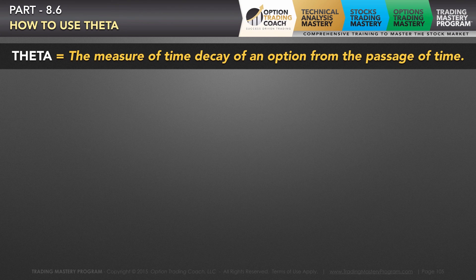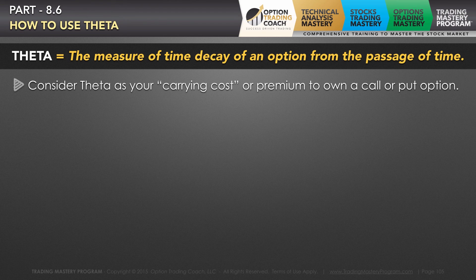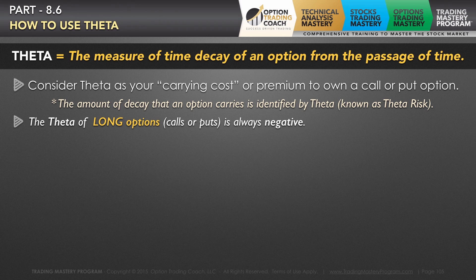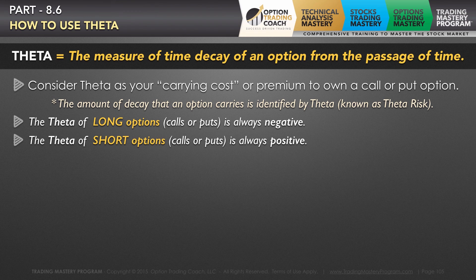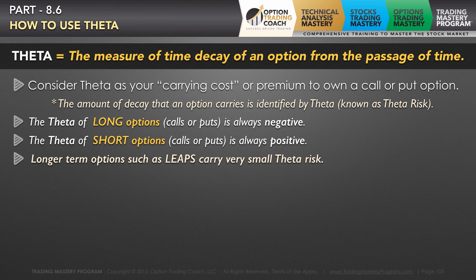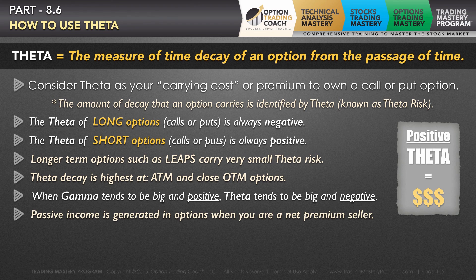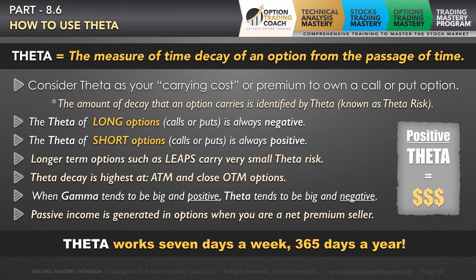Theta is the measure of time decay of an option. This is a huge insight into what professional traders use to make consistent monthly and weekly profits in the stock market. Consider Theta as your carrying cost — the premium you pay to own a call or put — and it's identified as your theta risk: how much is it costing me to carry this position every day? The theta of long options, whether you buy a call or a put, is always going to be negative. On the flip side, the theta of a short option, whether you sell a call or put, will always be positive. Longer-term options such as LEAPs carry a very small theta risk. When gamma tends to be big and positive, theta tends to be big and negative — that's the inverse relationship between these option Greeks. Understanding positive theta is how you can create and generate consistent income from the stock market. Understanding Delta, Gamma, Theta, and Vega is important because when we get into option strategies for bullish, bearish, and sideways markets, this is what really wraps everything together.